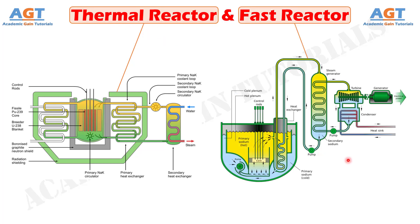A fast neutron reactor, or simply a fast reactor, is a category of nuclear reactor in which the fission chain reaction is sustained by fast neutrons, as opposed to thermal neutrons used in thermal reactors.